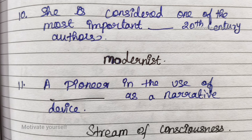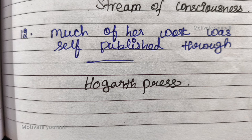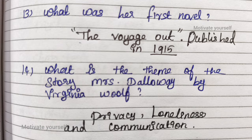Eleventh question: A pioneer in the use of stream of consciousness as a narrative device. Twelfth question: Much of her work was self-published through Hogarth Press. Thirteenth question: What was her first novel? The Voyage Out, published in 1915.